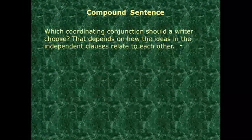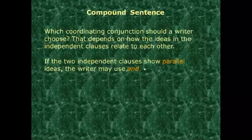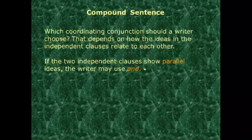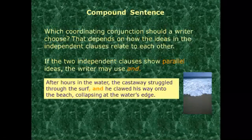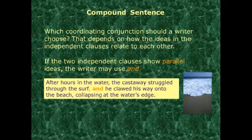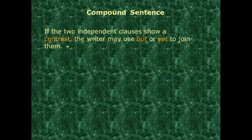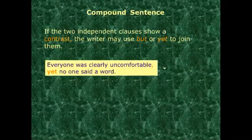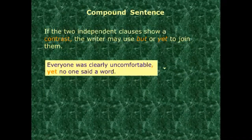Which coordinating conjunction should the writer choose? Use 'and' when the two clauses have parallel or equally important ideas. Example: 'After an hour in the water, the castaway struggled through the surf and clawed his way onto the beach, collapsing at the water's edge.' For contrast between clauses, use 'but' or 'yet.' Example: 'Everyone was clearly uncomfortable, yet no one said a word.' Another: 'At first we planned to brave the crowds, but we decided to stay home.'